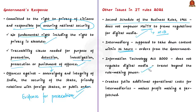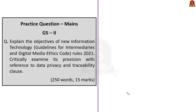Finally, the rules also create additional operational costs for intermediaries, requiring them to have an Indian-resident nodal officer, compliance officers and grievance officers. This makes profit-making a far-fetched goal for multinational corporations and startup intermediary enterprises. Regarding the traceability clause, in the absence of a data protection law, enforcing it would render more disadvantages than advantages.